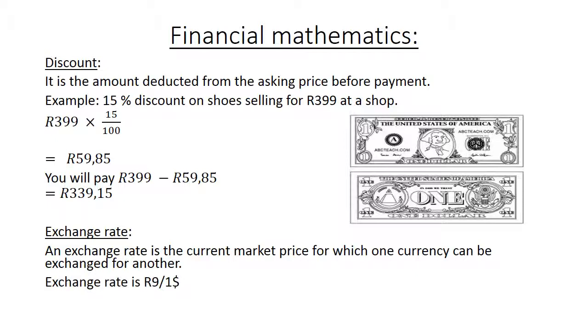For example, if the exchange rate is 9 Rand per $1, if you exchange 5,000 Rand, you divide it by the 9 and you will get 555 Rand and 56 cents.